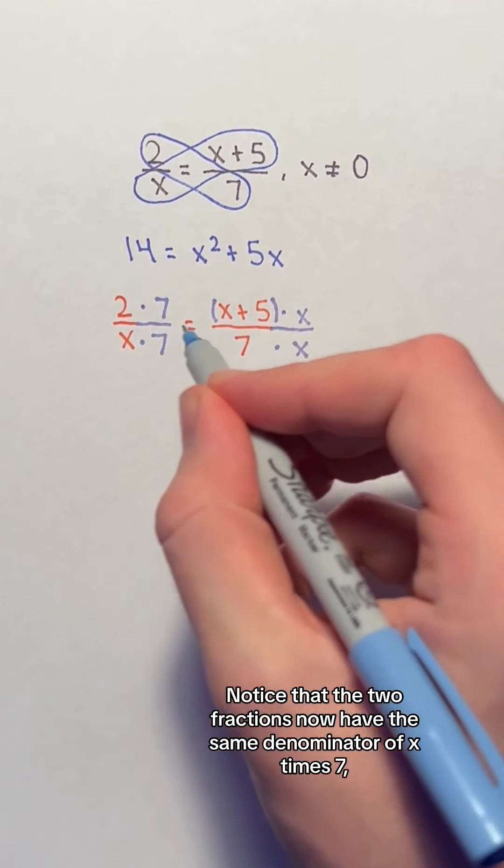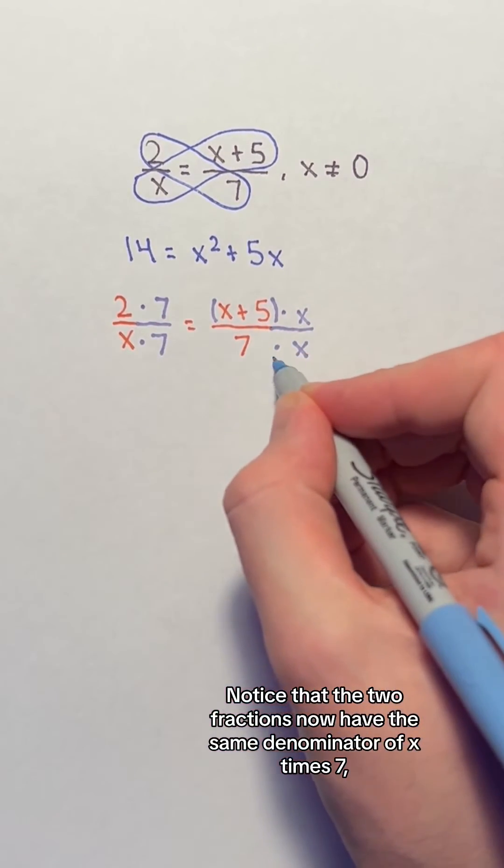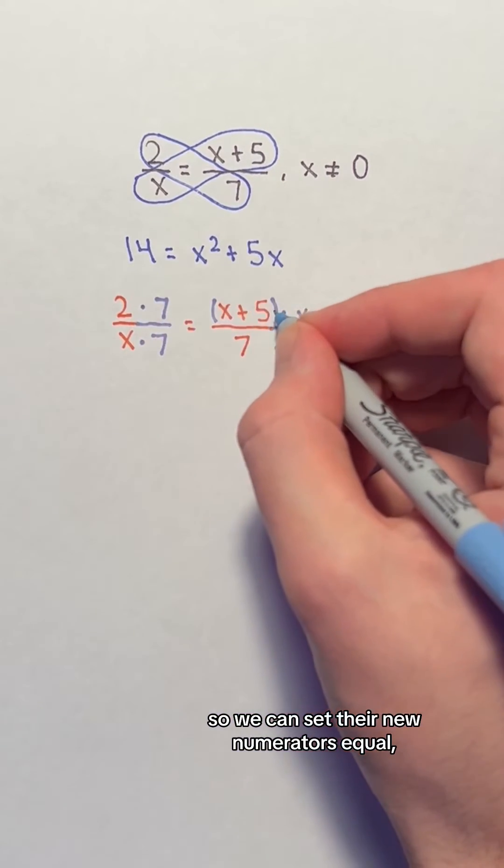Notice that the two fractions now have the same denominator of x times 7, so we can set their new numerators equal.